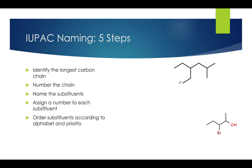If we start here or here, we'll note that the longest chain we find is 1, 2, 3, 4, 5, 6. So we know that this will be called a hexane. For now we know that there will be 6 carbons, so it will be called hexane. You can start from either end — it'll still be the same. I'll explain why I started here later on.